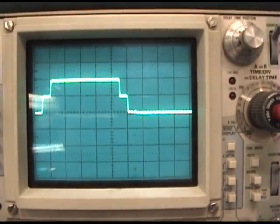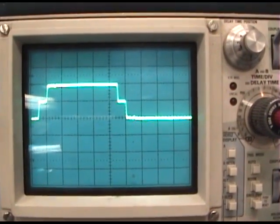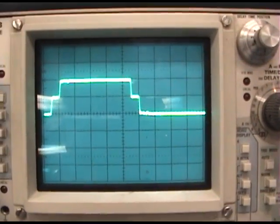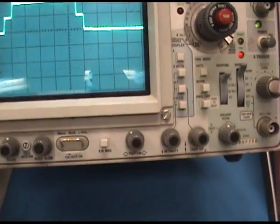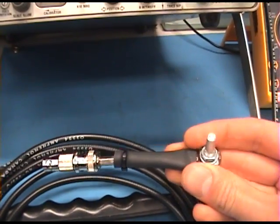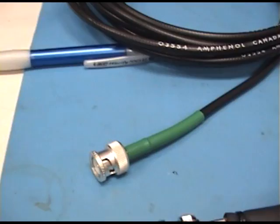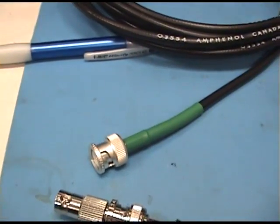You can also determine the impedance of the cable by connecting a potentiometer to the end of the cable. So, basically, I have this potentiometer here. I soldered it to a BNC connector and I'll just place it on to this cable.